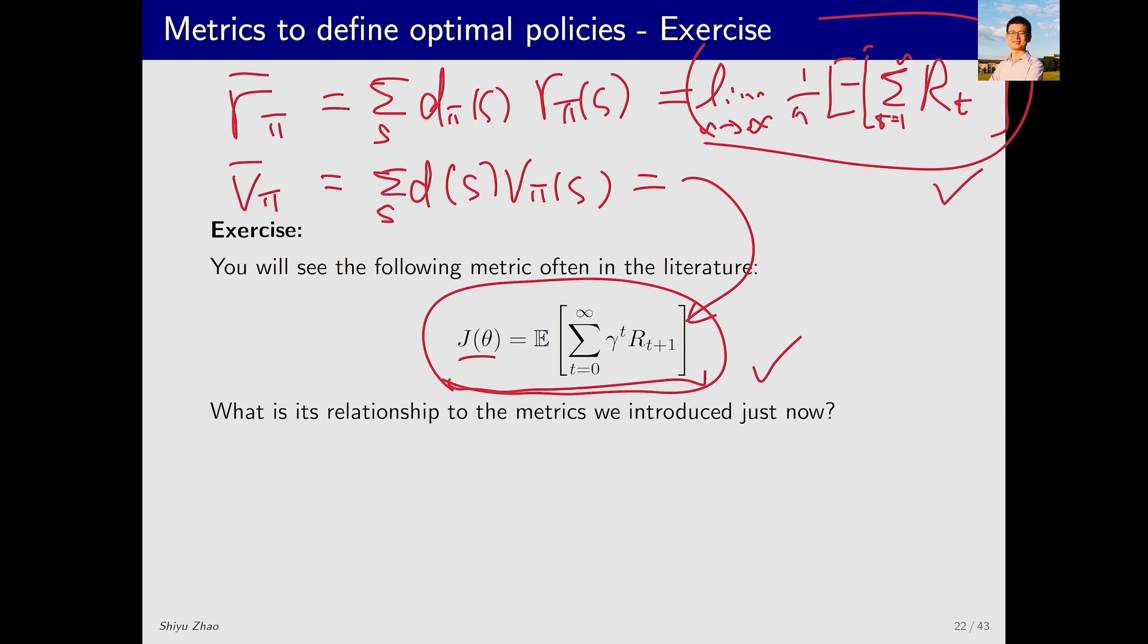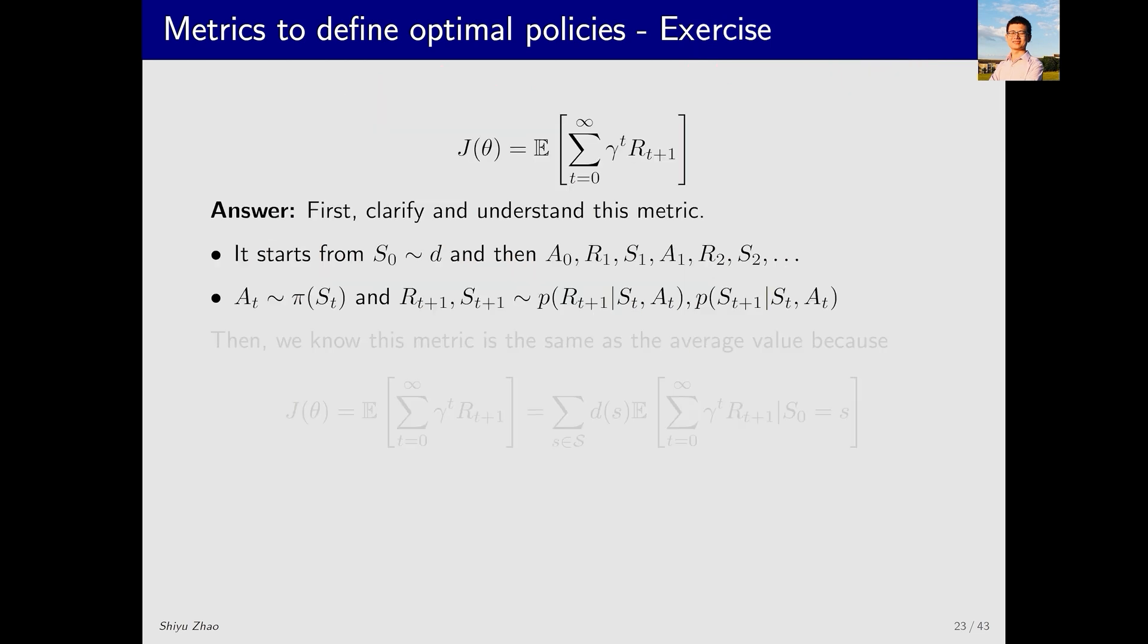The fact is that this is actually v̄_π. Why is that? Let's take a look. In fact, it is very simple. You might be confused at first, but it's actually straightforward. Let's assume this trajectory starts from state s_0 and s_0 obeys this distribution. Then I get a trajectory: s_0, a_0, r_1, s_1, a_1, and so on.